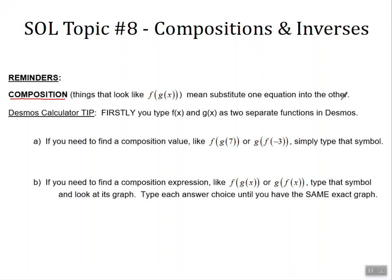The tip that we're going to show you on the Desmos calculator, well firstly we need to type f of x and g of x as two separate functions in Desmos. And then there are two types of questions you might see. If you need to find a composition value like f of g of 7 or g of f of negative 3, we're simply going to type that symbol and get our answer. That will look like example number one today.